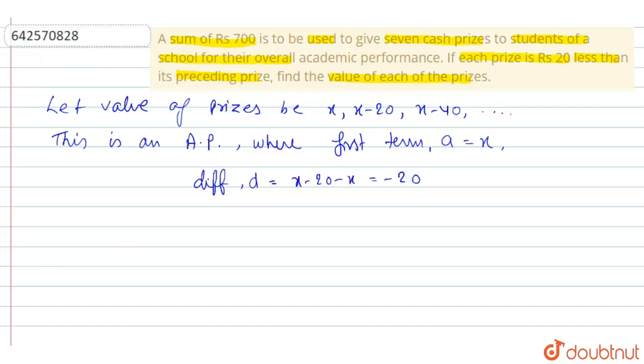Now for this AP, it is given that sum of n terms is equal to 700. We know that S of n is equal to n by 2 into 2A plus n minus 1 into D.